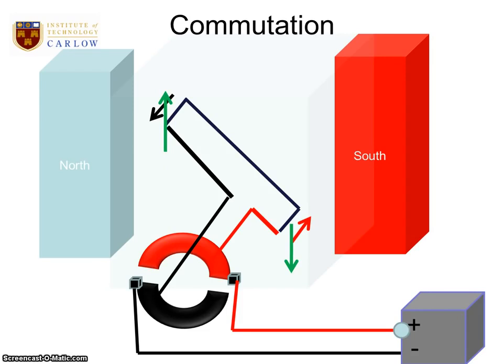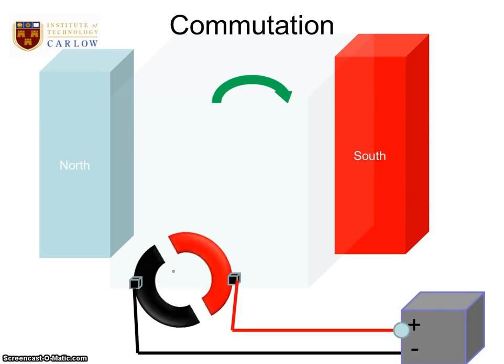So that's what commutation does. It reverses the direction of the current in the motor every half cycle. And that's what allows our motors to rotate. I hope that's cleared it up. Thanks.